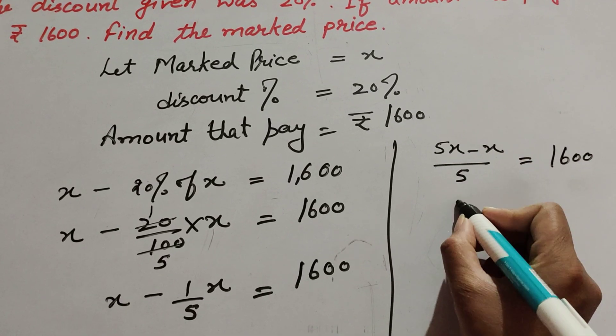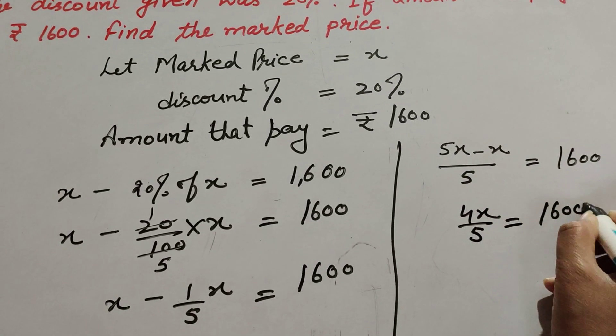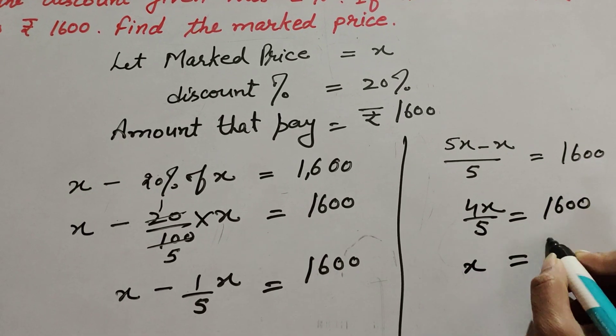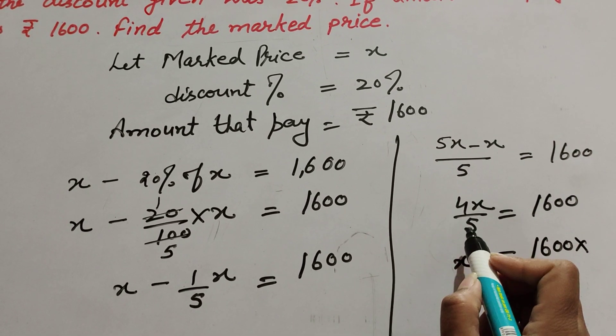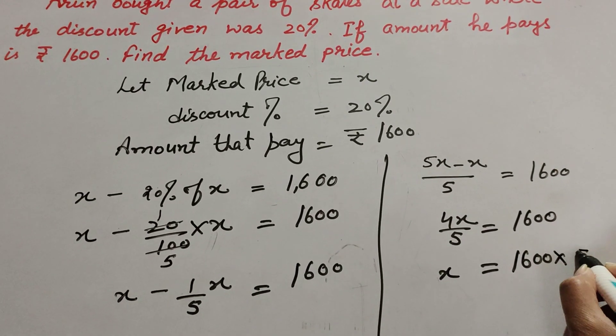5x minus x equals 4x over 5, which equals 1600. So x equals 1600 multiplied by... When we transpose 4/5 to the right-hand side, we multiply by its reciprocal, which is 5/4.